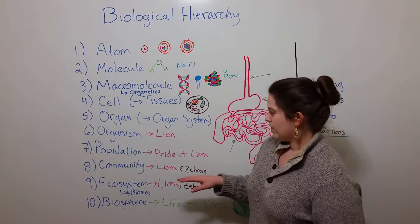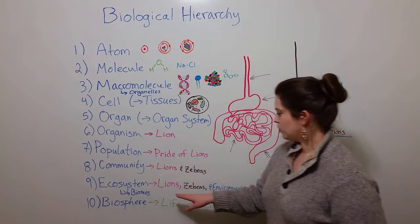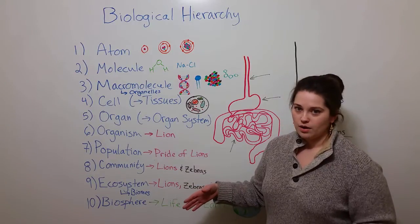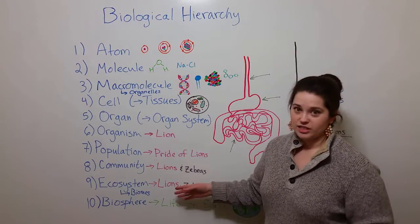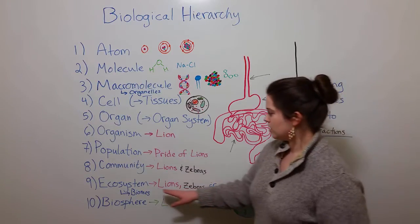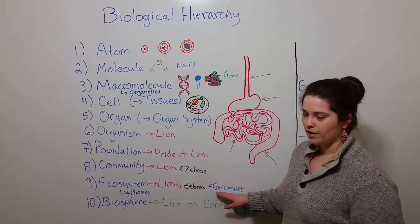And if we keep with this theme of African savanna animals, an ecosystem would be made up of lions, zebras, and all other populations that are present, as well as the environment. So the ecosystem is when you've got all of the organisms interacting with their environment.